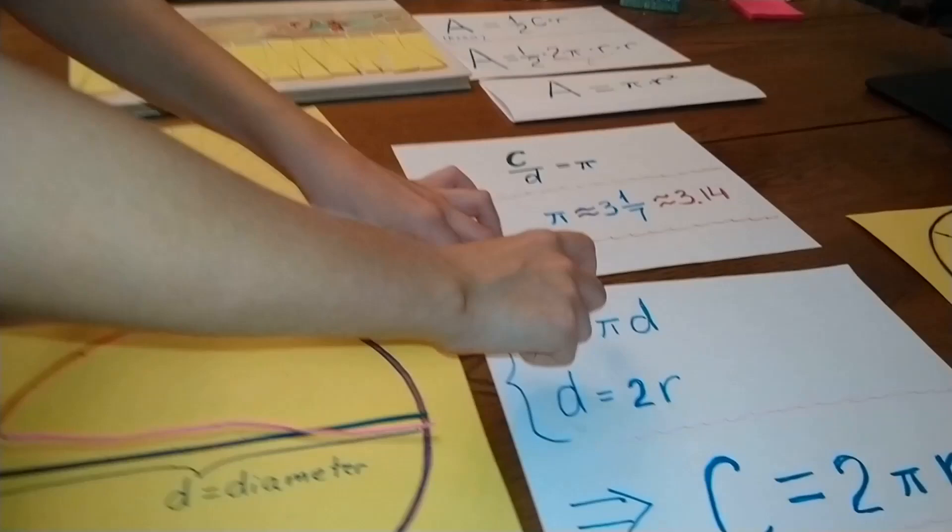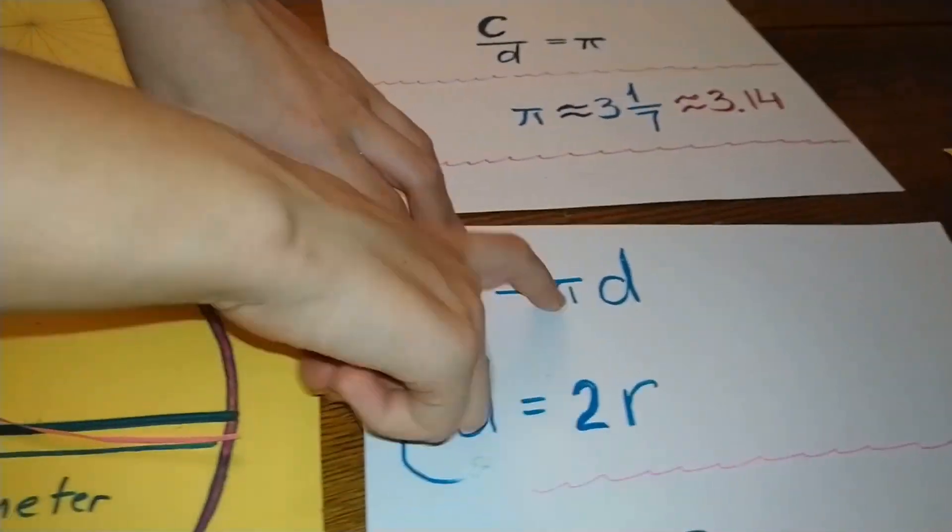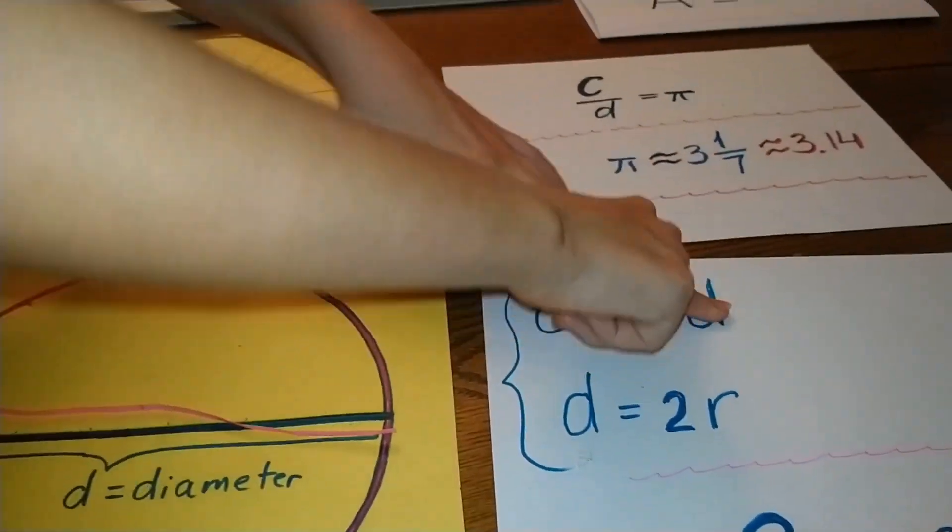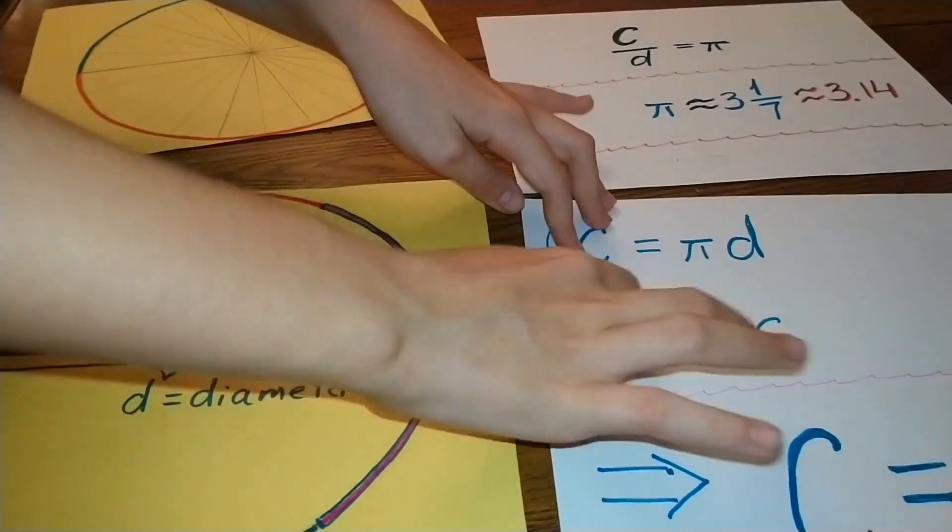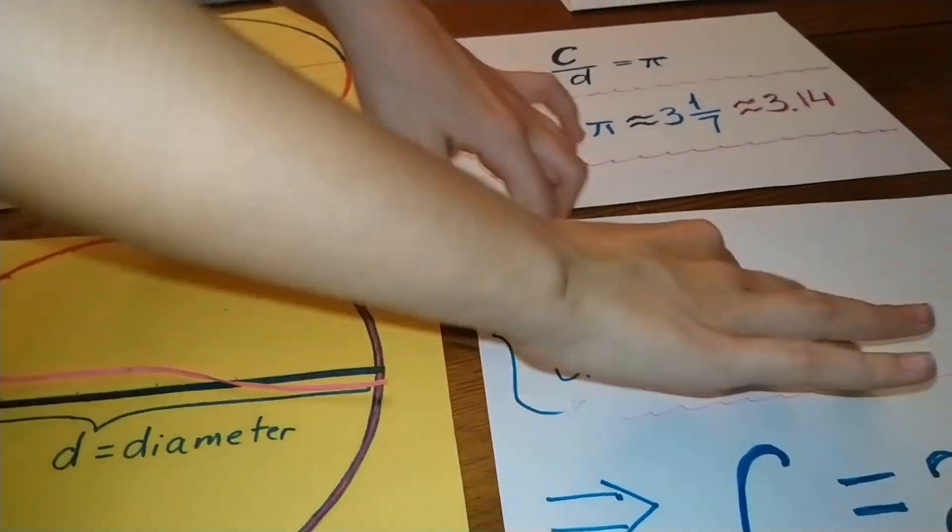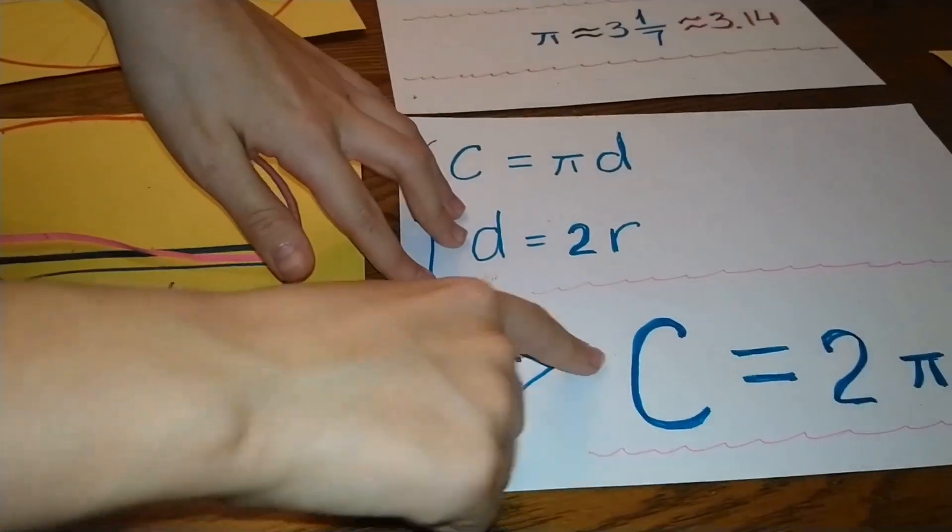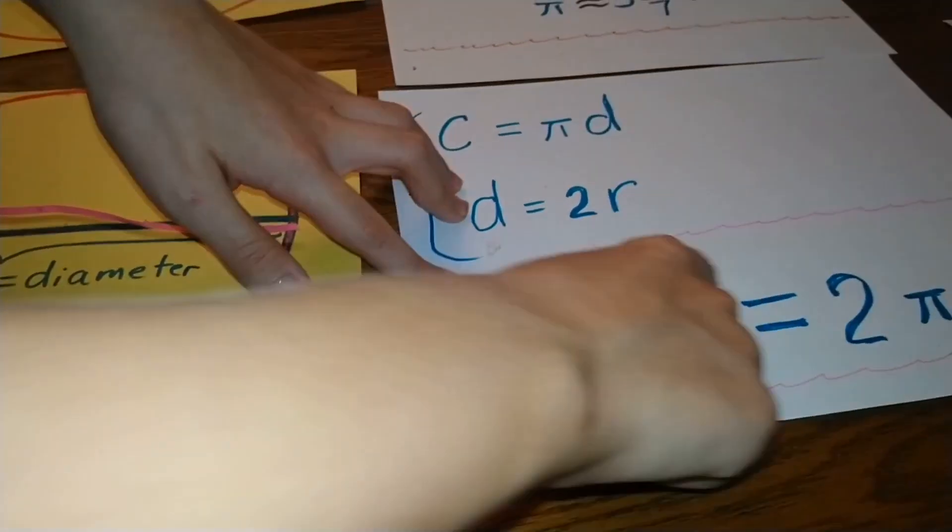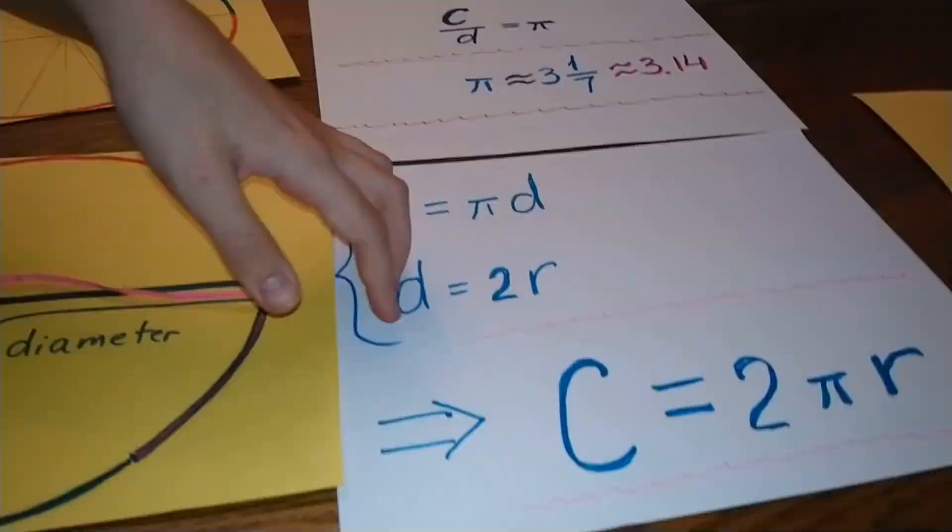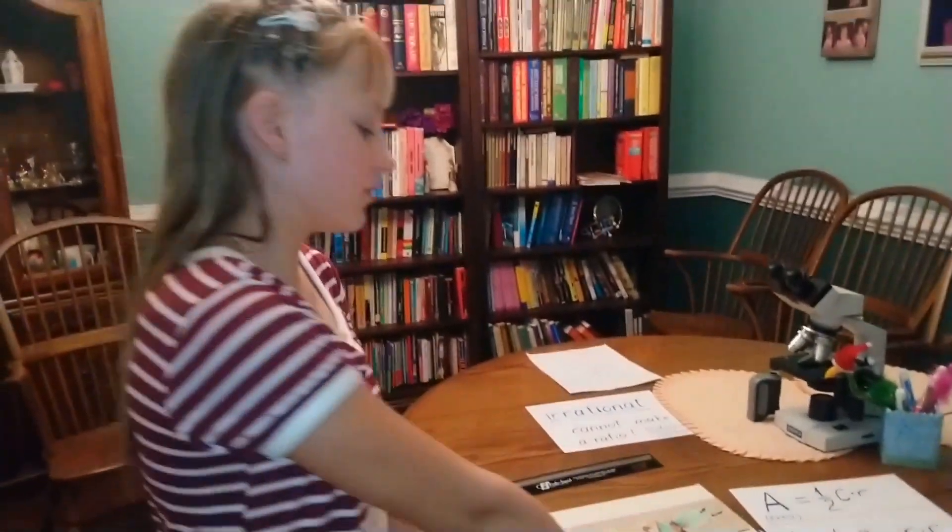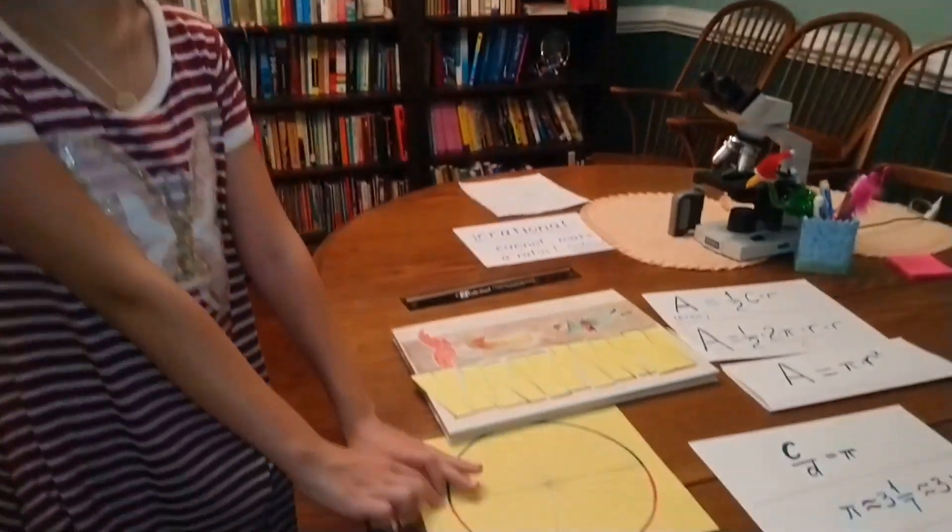The circumference equals π times diameter. Diameter equals two times radius. Therefore, circumference equals 2πr. In order to find the area of a circle...